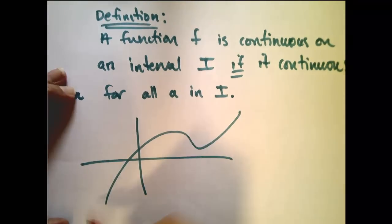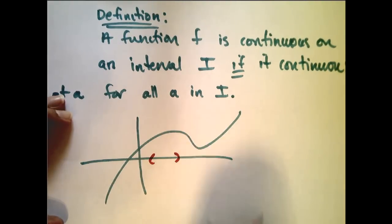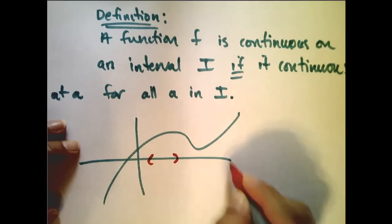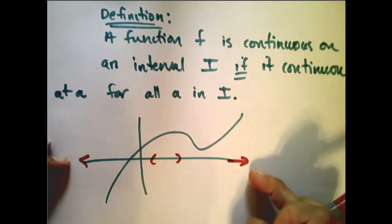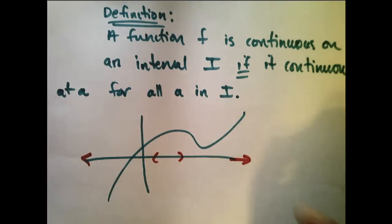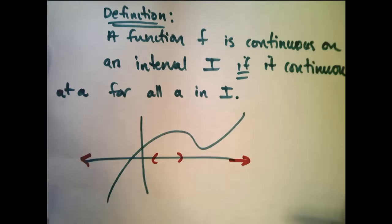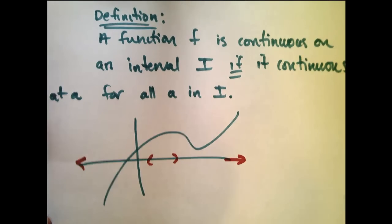That means, for whatever interval I choose, I could choose my I to be just this piece right here, or it could be the whole number line. If I never pick up my pencil on whatever my interval is, then I would say that it is continuous on that interval. That is, it is continuous for every a value in that interval.